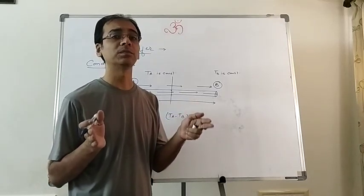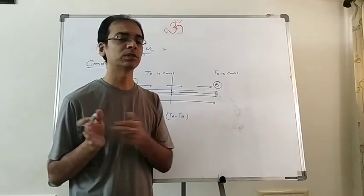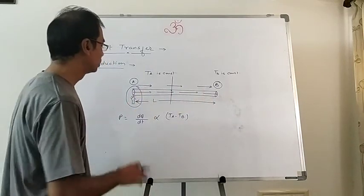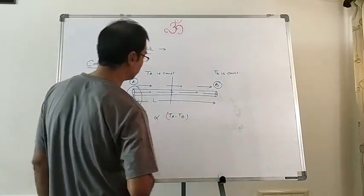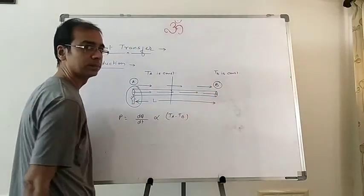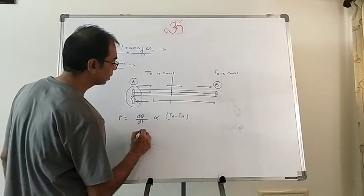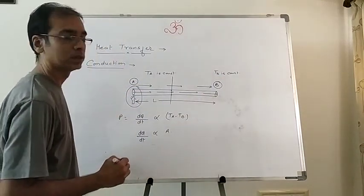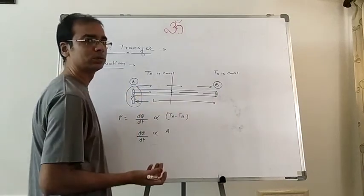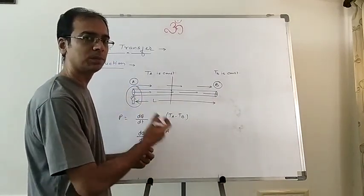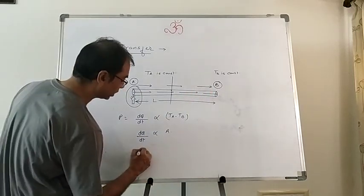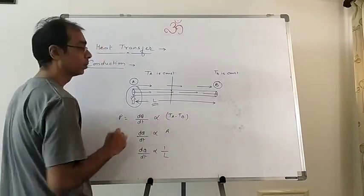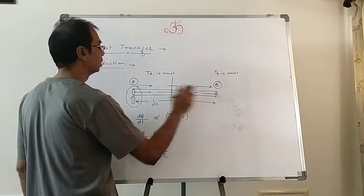Always remember: steady state is not thermal equilibrium. Thermal equilibrium means the temperatures of the two ends become the same — then no heat is passed. But in steady state, temperatures are constant, not the same. So dQ/dt is proportional to T_A minus T_B. Second, dQ/dt is also proportional to the cross-sectional area A, because more area means more molecules involved, more collisions, more heat transferred. And dQ/dt is inversely proportional to the length L.